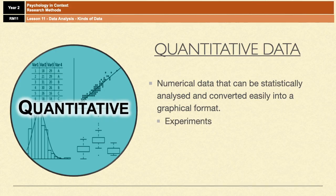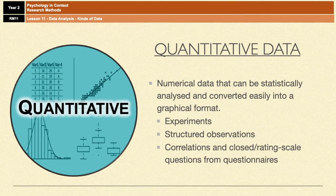You can get quantitative data from doing experiments. So for example, a memory experiment and seeing how many words an individual can remember. It's easy to count up how many words they remembered, and it is quantitative data. You could also do things like structured observations, correlations, or questionnaires with closed questions.